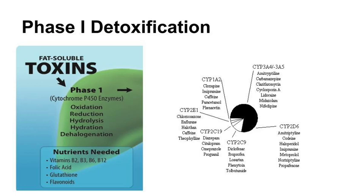Other more specific enzymes also play crucial roles in Phase I. Flavin monooxygenases detoxify nicotine from cigarette smoke, alcohol and aldehyde dehydrogenases aid in alcohol metabolism, and monoamine oxidases are important for neurotransmitter degradation.